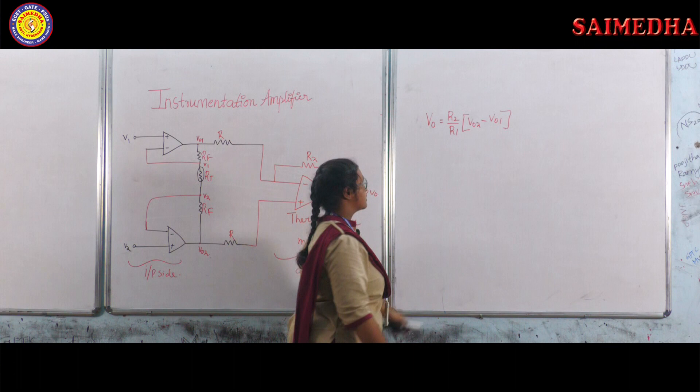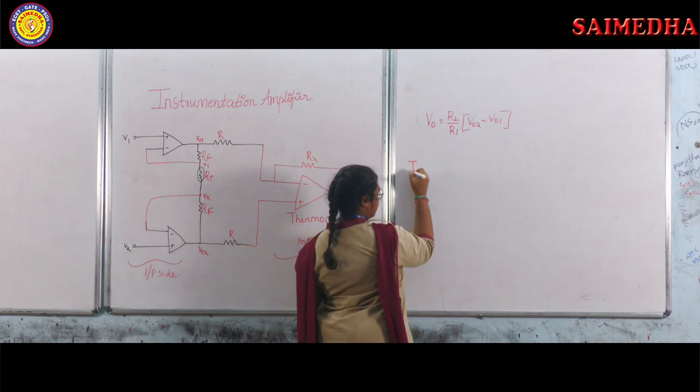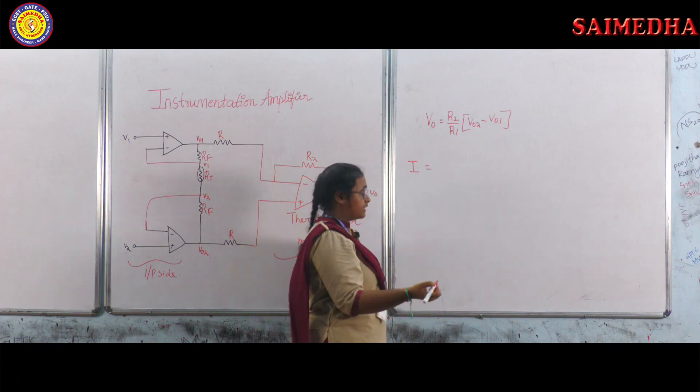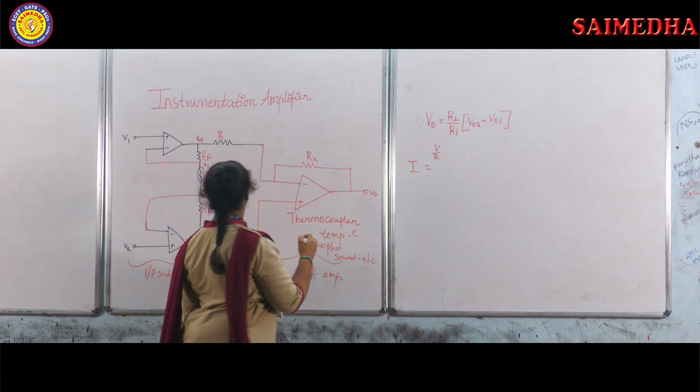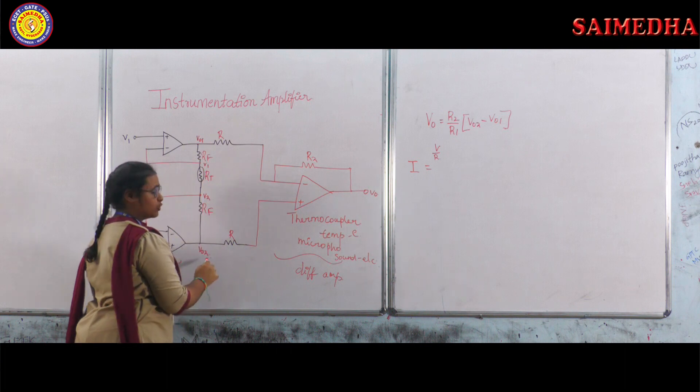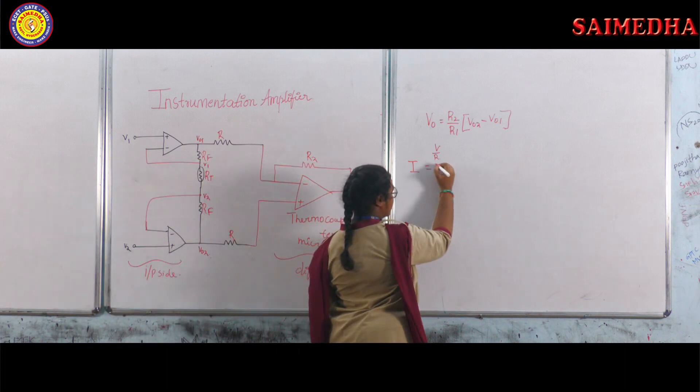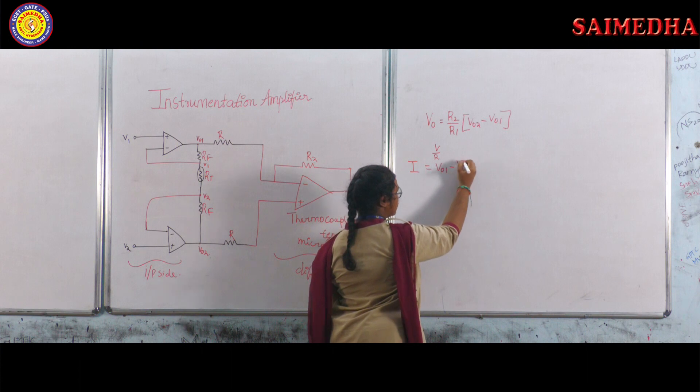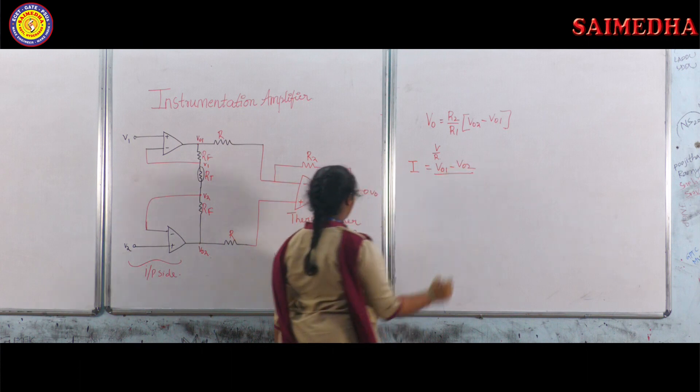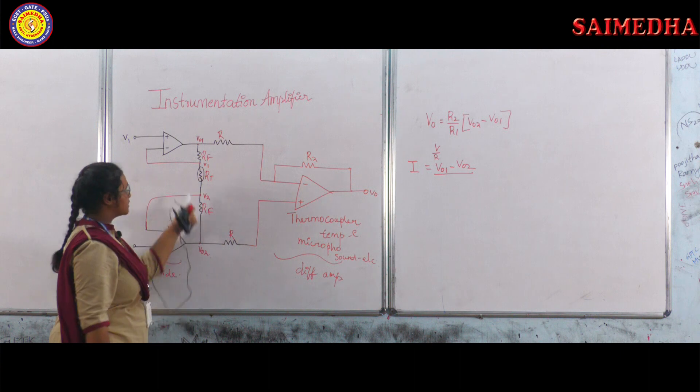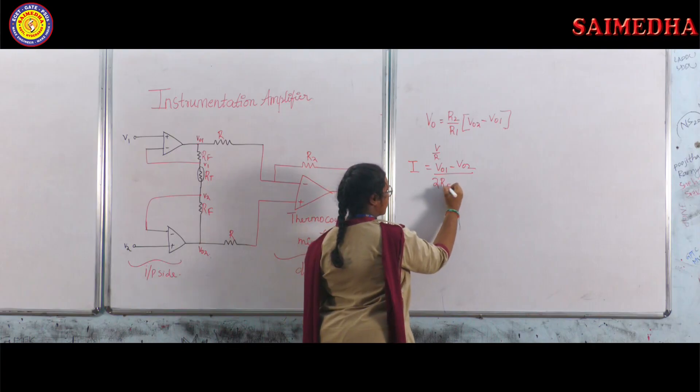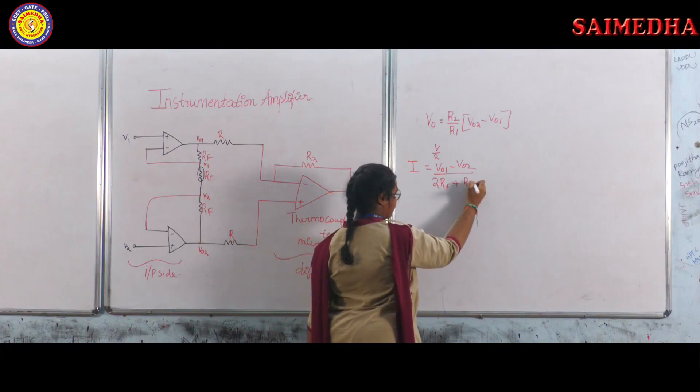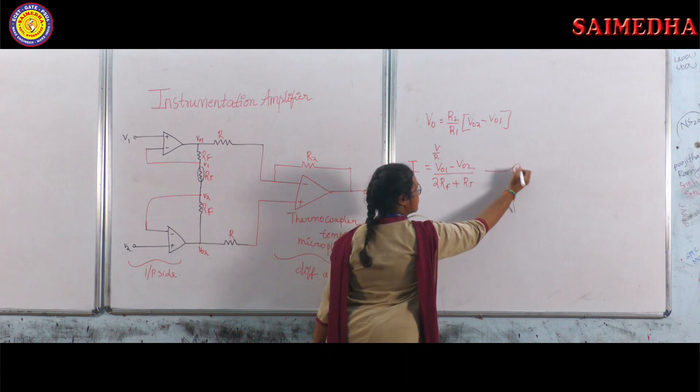Here we need to know these voltages, so first let us know the current. Current equals V by R. Here voltages are VO1 and VO2, two voltages are there. So we need to take the difference. That is VO1 minus VO2 by, and here we are having two resistors, RF and two RFs and one RT. So we will take 2RF plus RT. Consider this as first equation.